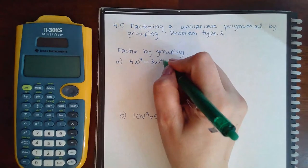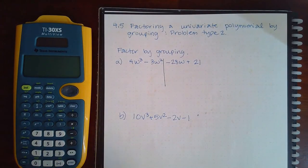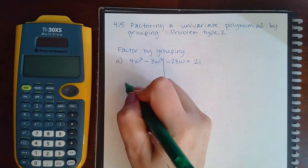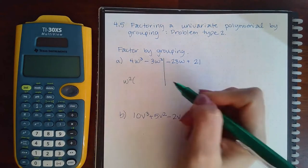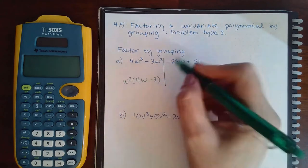I'm going to chop it after the second term before the third term's sign. So these two have a w squared in common, and if I factor the w squared out I'm left with 4w minus 3.